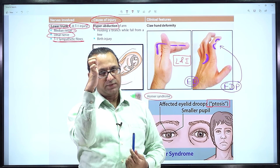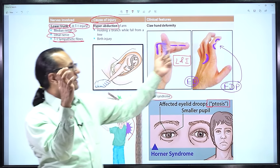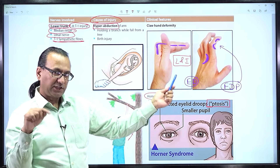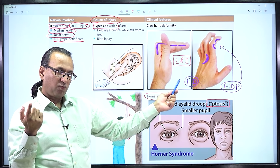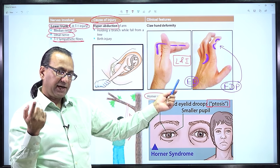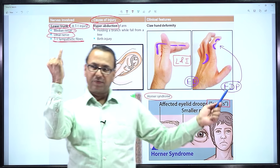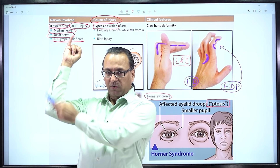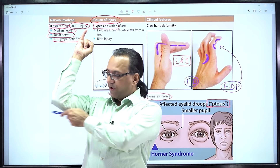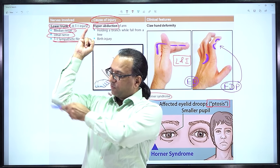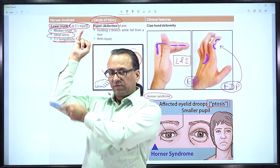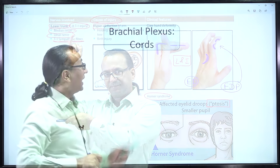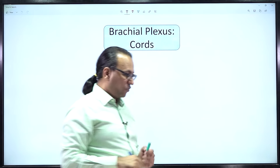There will also be sensory loss: C8 corresponds to the little finger and ulnar nerve territory, and T1 corresponds to the medial elbow, so sensory loss in the little finger region and medial elbow will be present in Klumpke's palsy.